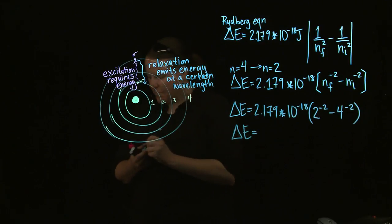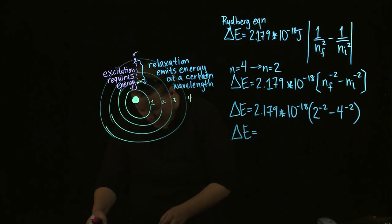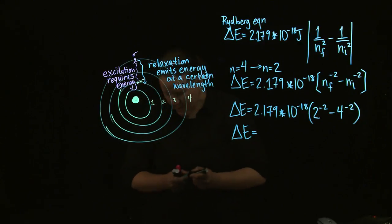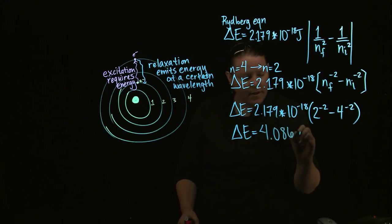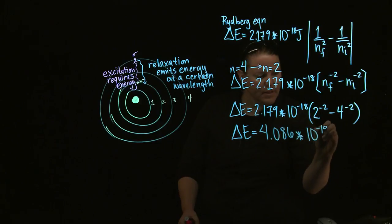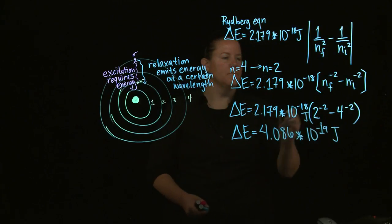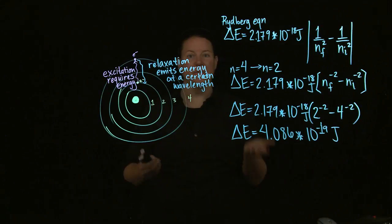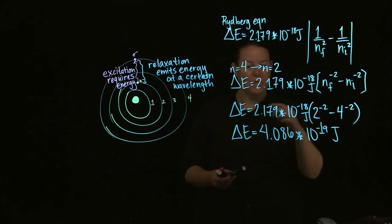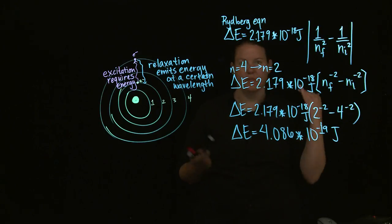2.179 times 10 to the negative 18th, and we'll do 2 to the negative 2 power minus 4 to the negative 2 power. And if I calculate this out correctly, that becomes 4.086 times 10 to the negative 19th joules. Fabulous! That is a wonderful number. That's exactly the kind of number we want to see.